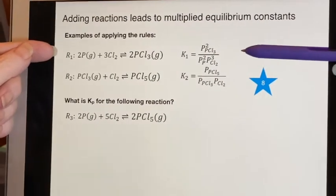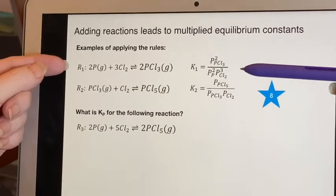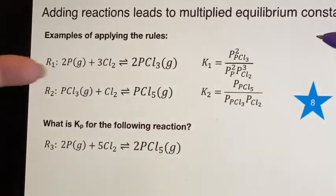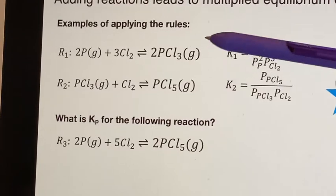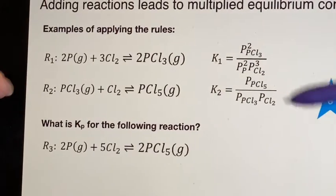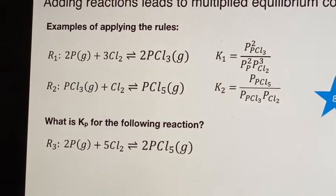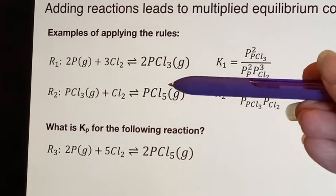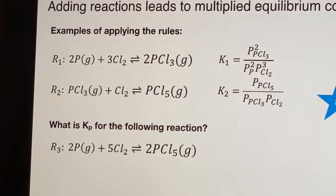Applying the rules some more. Let's do it with some actual equations. Here's an equation where you're taking phosphorus and adding chlorine and making phosphorus trichloride. Turns out if you take the phosphorus trichloride and add more chlorine, you can turn it into phosphorus pentachloride.